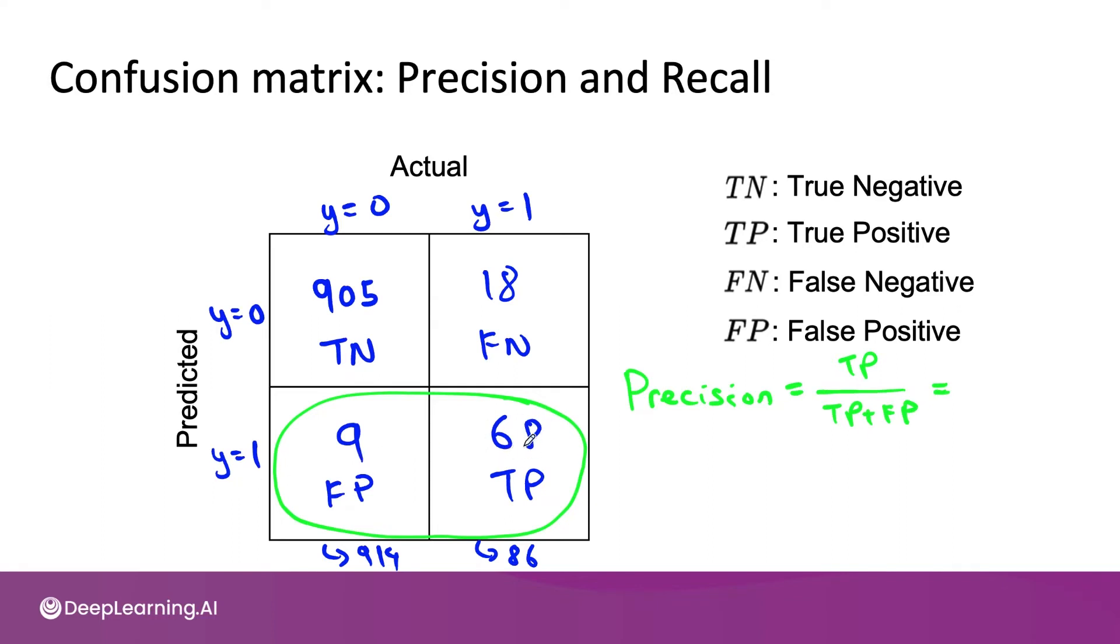68 of them were actually right. So the precision is 68 over 68 plus 9, which is 88.3%.